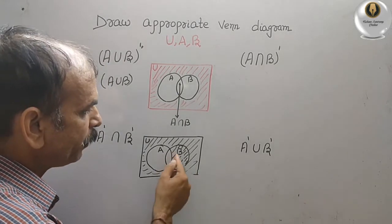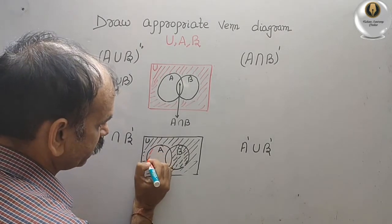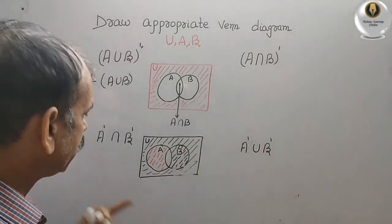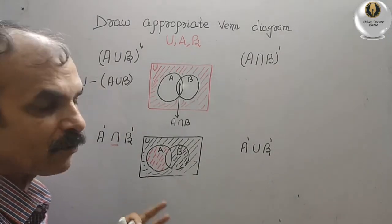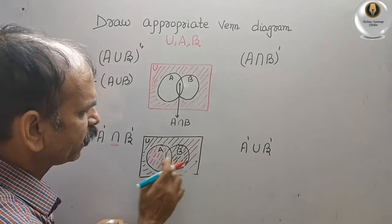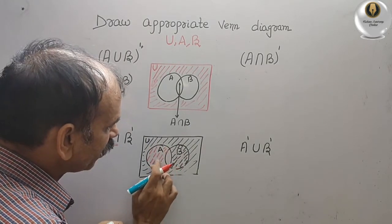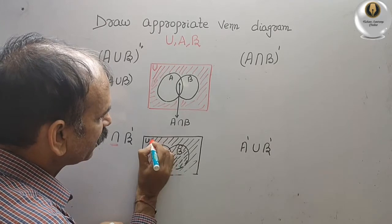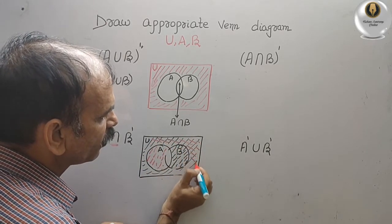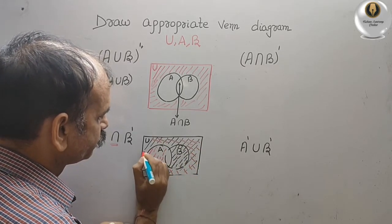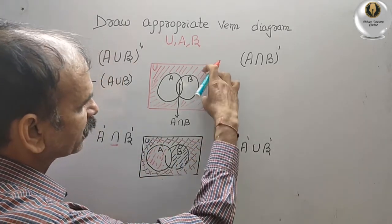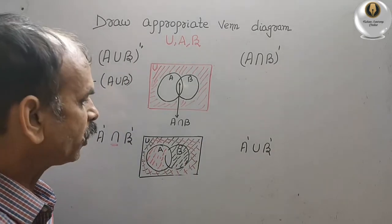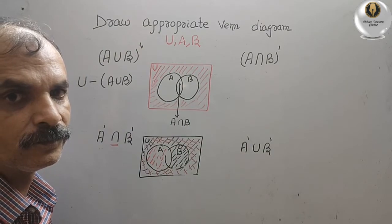But if you shade B complement, it will come into A also. Now they have told intersection — where are they intersecting in the remaining part? So wherever both shadings overlap, that is your answer: the outer part, just the same. So we know this is De Morgan's theorem — whatever you get here, same you will get there.